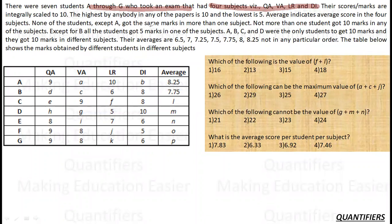None of the students except A got the same marks in more than one subject — so A is the only student who can have the same marks in more than one subject. Not more than one student got 10 marks in any subject. Except for B, all the students got 5 marks in one of the subjects.